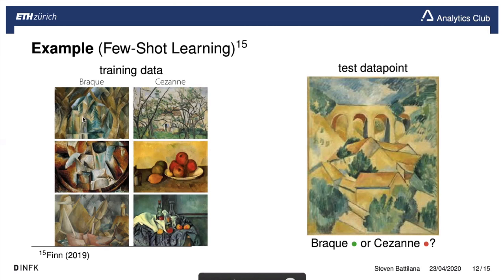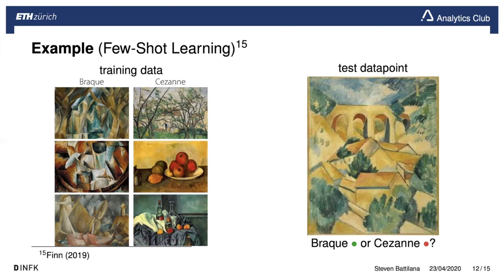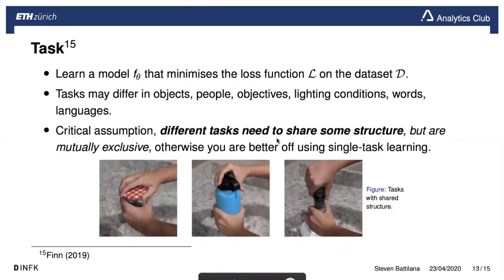That classification was possible because of prior experience — you can't even fully articulate what prior experience you used, but you've experienced enough in life to classify that test point easily. In machine learning terms, we're moving toward meta learning in order to teach a machine the same behavior you just demonstrated.